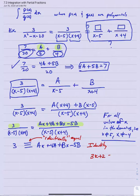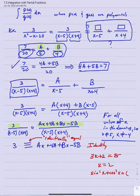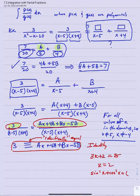We write a triple equal sign to denote 'identically equal' — this is called an identity, an equation true for all valid values of x. Compare: 3x + 2 = 8 has one solution x = 2, whereas sin²x + cos²x = 1 is true for infinitely many values of x. Similarly, we want our numerator equation to be an identity true for all x.